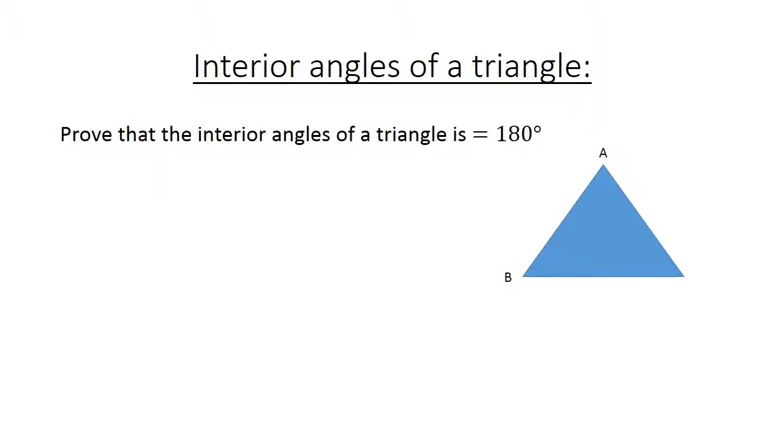Interior angles of a triangle. Method 2: Again we are going to prove that the interior angles of a triangle equals 180 degrees. We have triangle ABC. Through A we are going to draw a line DE parallel to BC.